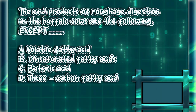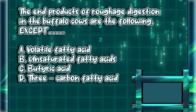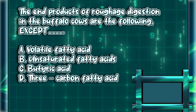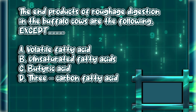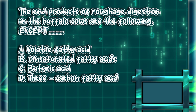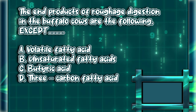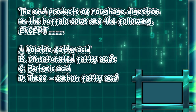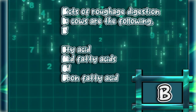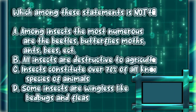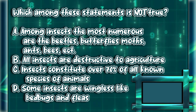The end products of roughage digestion in buffalo cows are the following EXCEPT: A) Volatile fatty acid, B) Unsaturated fatty acids, C) Butyric acid, D) 3-carbon fatty acid. The answer is letter B.